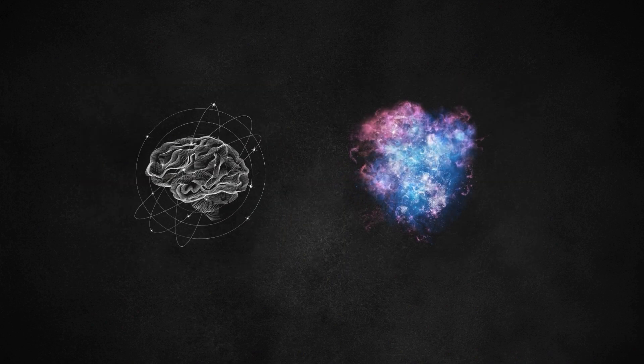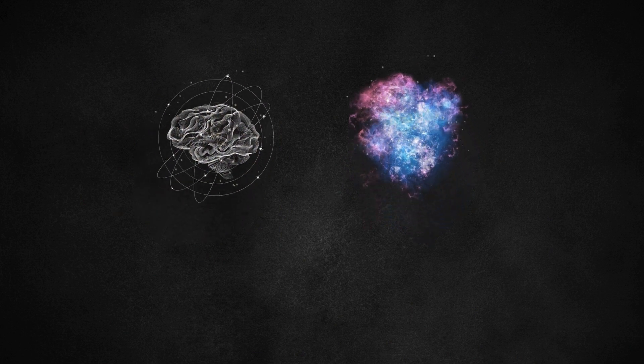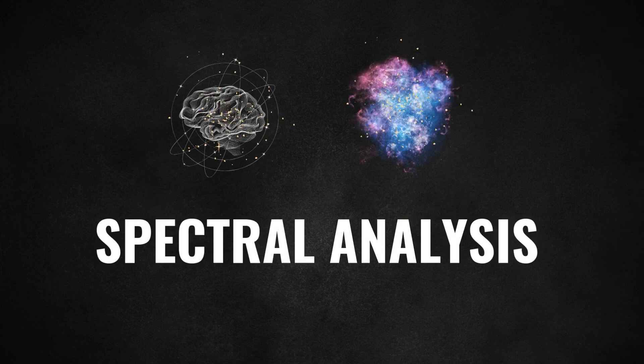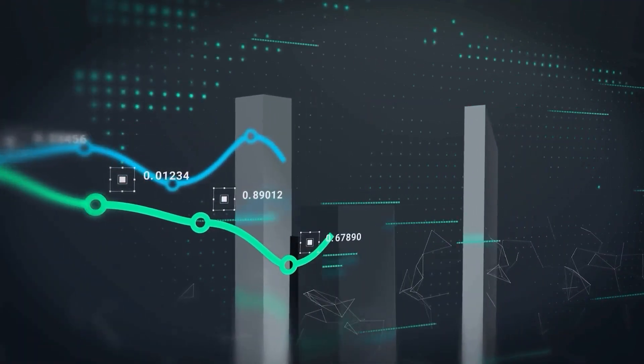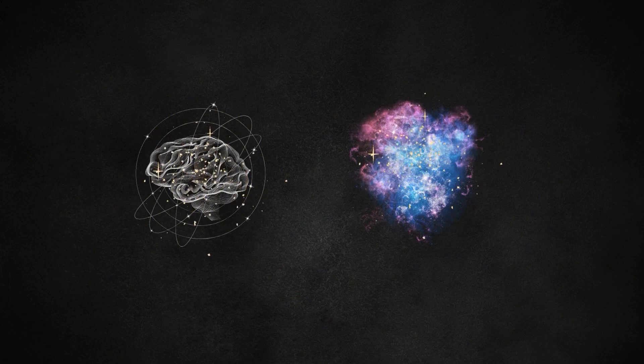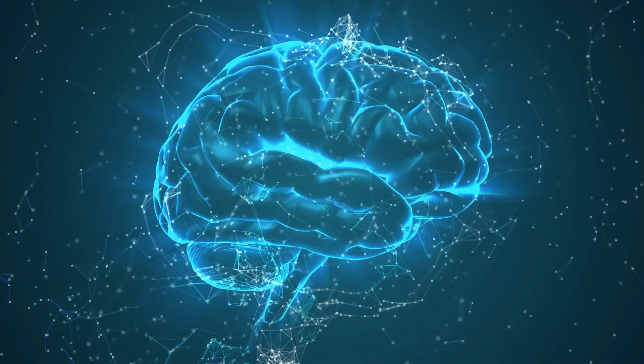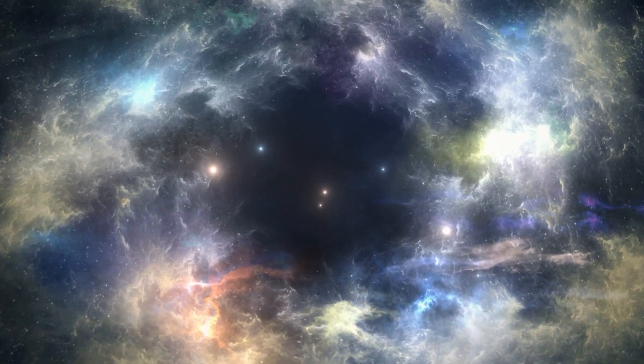These two researchers also studied the variations in matter density within the human brain and the cosmic web. This process is called spectral analysis. I don't want to go into too much detail and confuse you. But we can roughly say this. This spectral analysis examines the different frequency components within complex structures and determines the density distributions. As a result of this analysis, similarities have been observed. So both systems are similar in terms of complex network structures and density distributions.